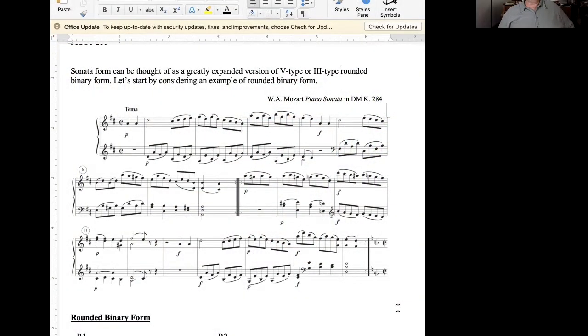It illustrates a dominant type rounded binary form. Now, sonata form can be thought of as a greatly expanded version of either a dominant type or a relative major type rounded binary form, depending on whether it starts in a major or a minor key.